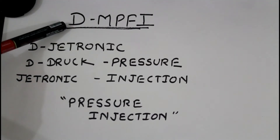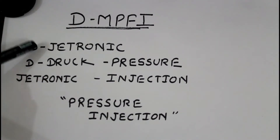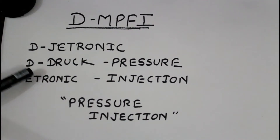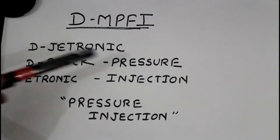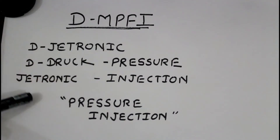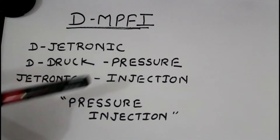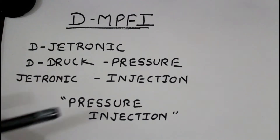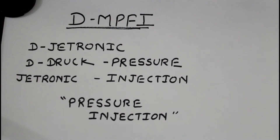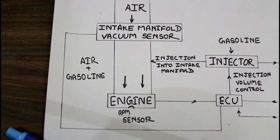DMPFI refers to D-Jetronic, which is a trademark of Bosch. D-Jetronic is a word created from the German word 'Druck,' which means pressure, and 'Jetronic,' a word coined by Bosch meaning injection. In simple terms, it can also be called pressure injection. The DMPFI system works on the manifold pressure control type.